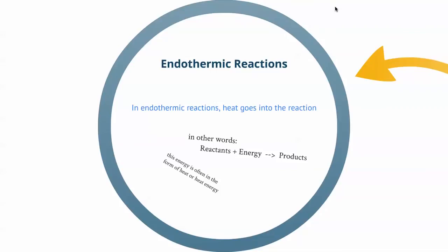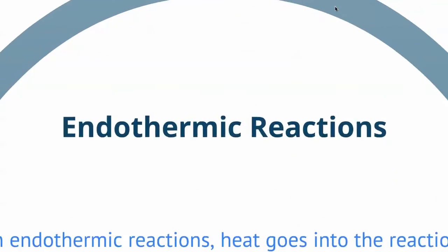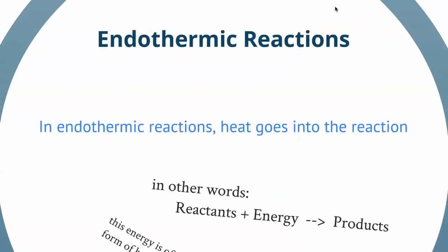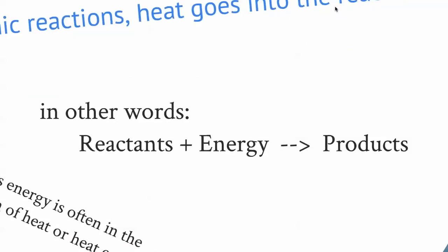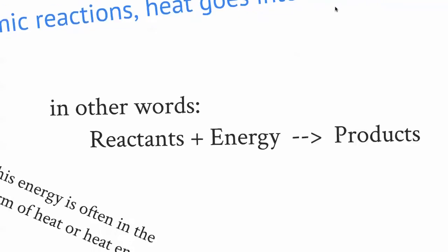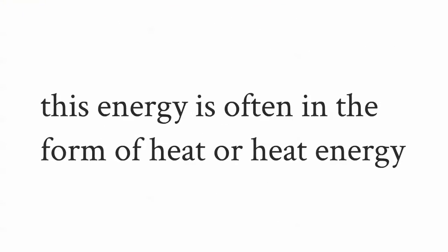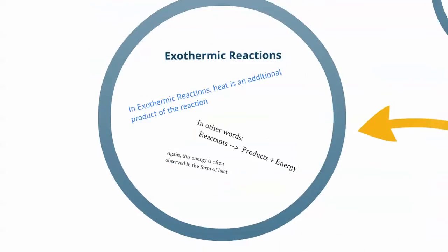In chemistry, there can be two kinds of reactions: endothermic reactions and exothermic reactions. In an endothermic reaction, heat or energy goes into the reaction. You have the reactants plus some energy to get the reaction started, yielding the products. This energy is often in the form of heat. Remember when we did that big scary chemistry lab and you had to heat up the chemicals for the reaction to take place? That would be an endothermic reaction — you're putting energy in.